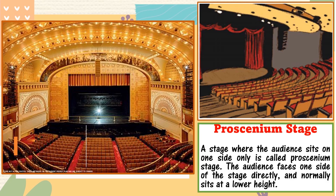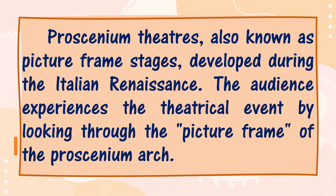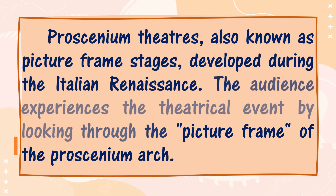Next is the proscenium stage. A stage where the audience sits on one side only is called a proscenium stage. The audience faces one side of the stage directly and normally sits at a lower height. Proscenium theaters, also known as picture frame stages, developed during the Italian Renaissance. The audience experiences the theatrical event by looking through a picture frame of a proscenium arch.